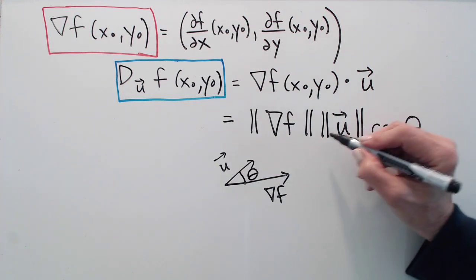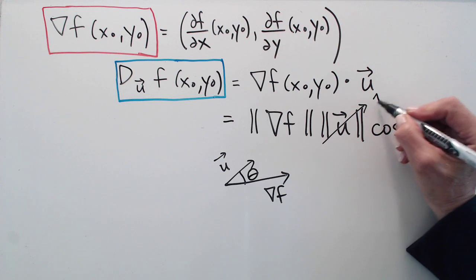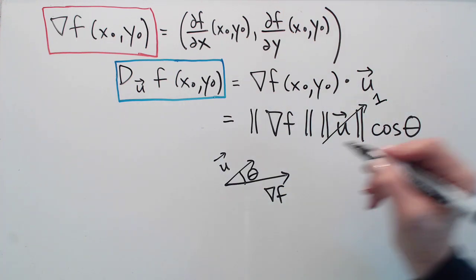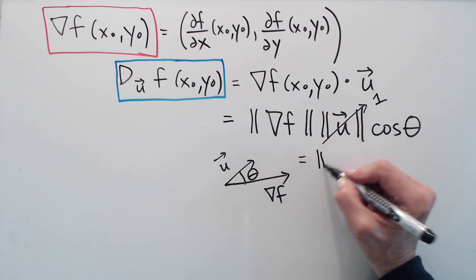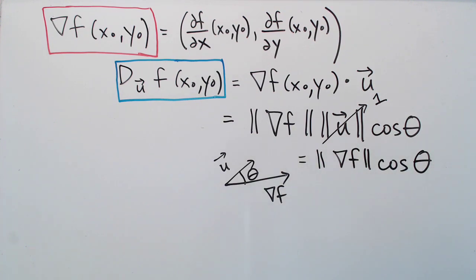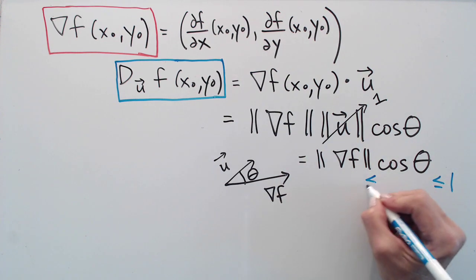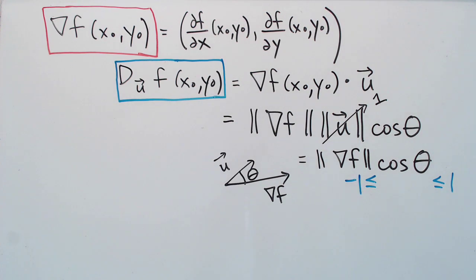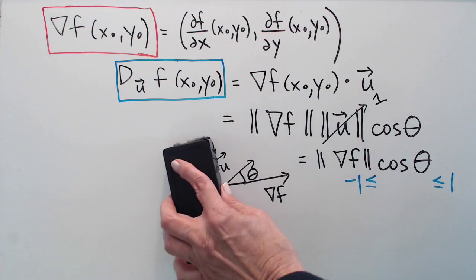Well we know that u is a unit vector, so this is just one. So this is actually equal to the length of the gradient vector times the cosine of the angle between u and the gradient. Now we know something important about the cosine, namely it's always between one and minus one.